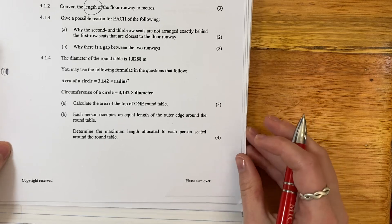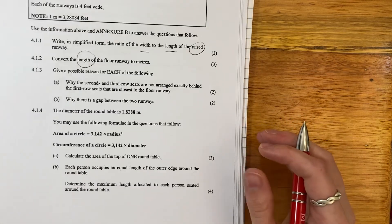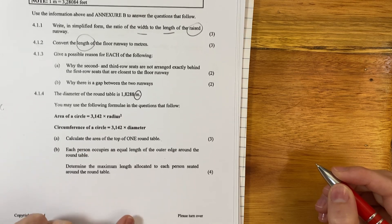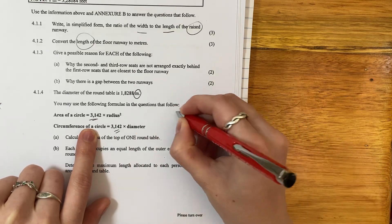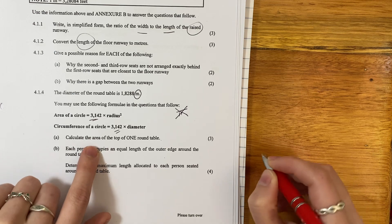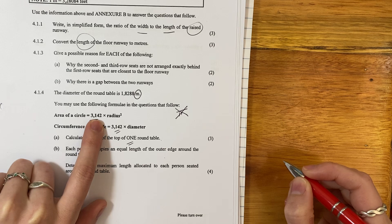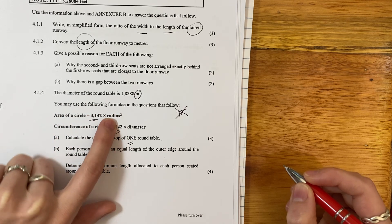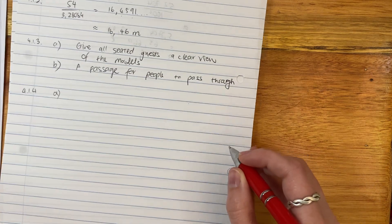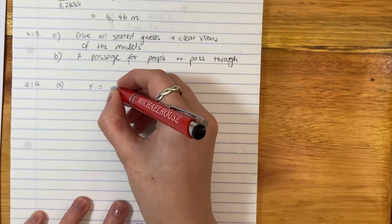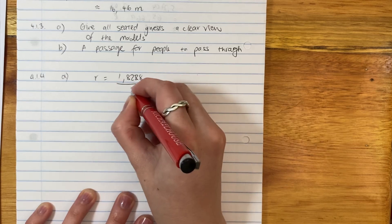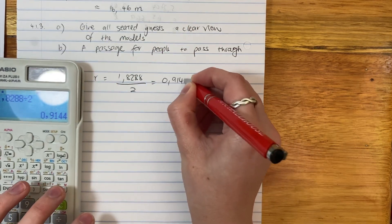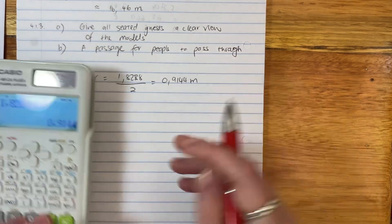The diameter of a round table is 1.8288 meters. You may use the following formula in the questions that follow. Very importantly, they've given you the value of pi. So don't just use pi in your calculator. Use what they've given you. Calculate the area of the top of one round table. The area is 3.142 times by the radius. A diameter is 2 of the radius. So to get a radius, we need to divide that by 2. First thing we do is we work on our radius. Radius equals 1.8288 divided by 2, which is 0.9144 meters.